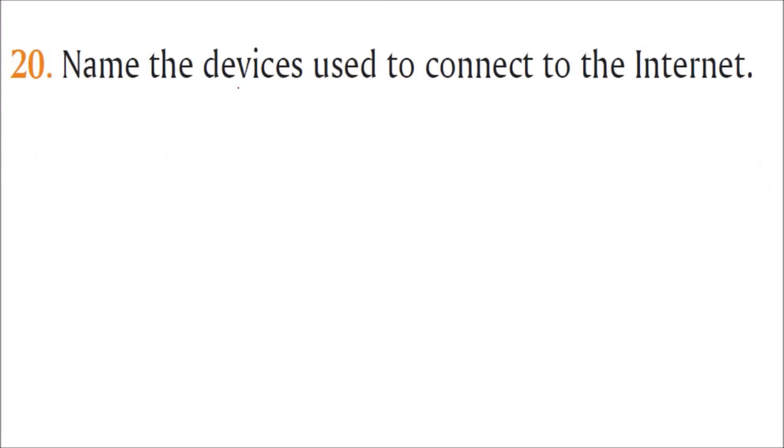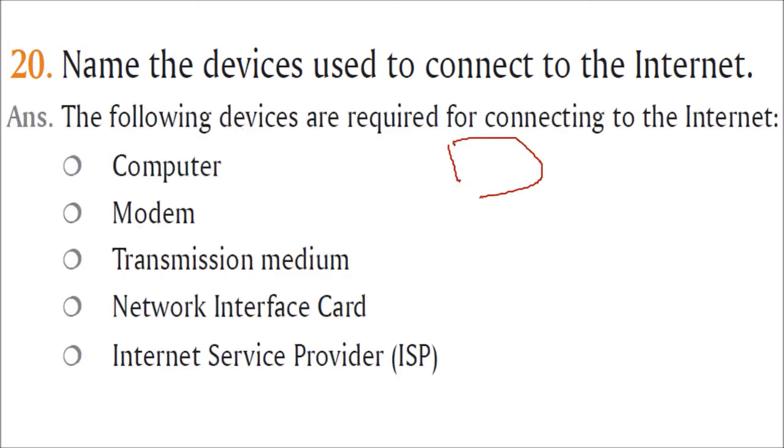Name the devices used to connect to the internet. In order to connect you need a computer, or your mobile or laptop, then you have modem - modulator demodulator, that is analog digital conversion. Transmission medium - it can be wireless or wired. Then you need NIC - network interface card is very important because this is how your network will work. An ISP, internet service provider, like BSNL, Jio, ATL. This is all you need to connect to the internet.